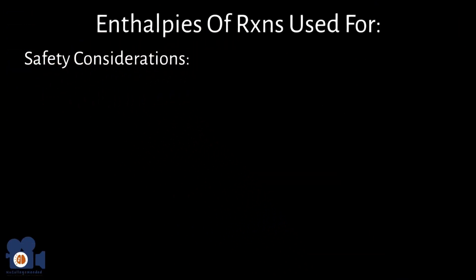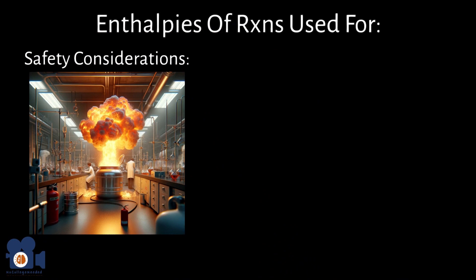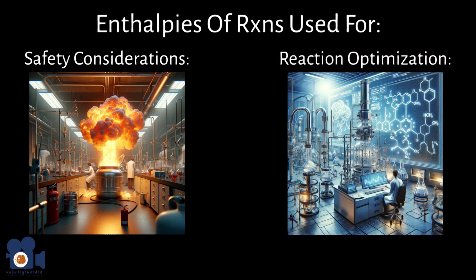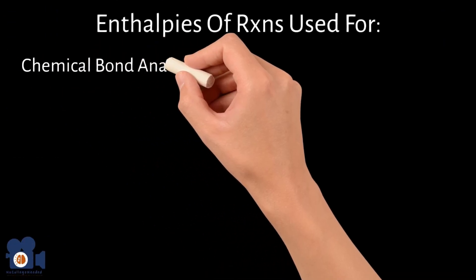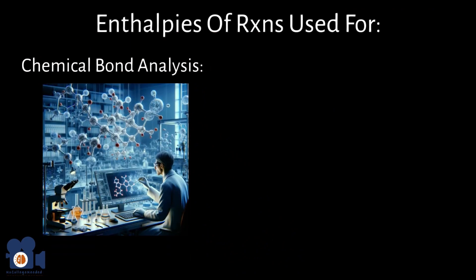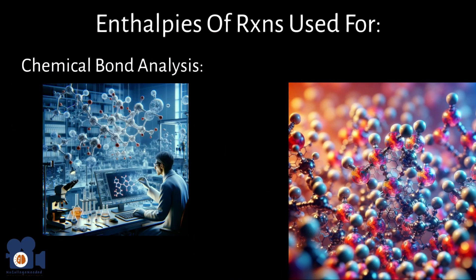There are some safety considerations. Knowing that enthalpy changes can help in assessing the risk of thermal runaway exothermic reactions. Reaction optimization. In industrial chemistry, understanding enthalpies helps in optimizing reaction conditions like temperature and pressure to maximize the yield and minimize energy consumption. Chemical bond analysis. Changes in enthalpy can give insights into the strength of chemical bonds formed and broken during a reaction. This contributes to a deeper understanding of molecular interactions and even helps with understanding of reaction mechanisms.